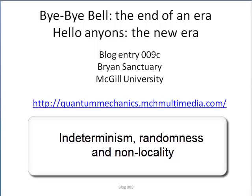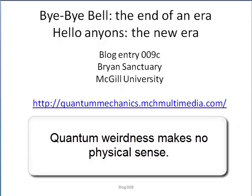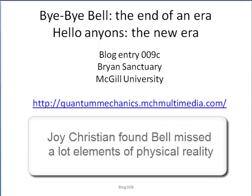First and foremost, the consequences from quantum mechanics in determinism and on locality are driving forces, because quantum weirdness makes no physical sense. The repudiation of Bell's theorem is a result of three independent studies. First, Girds has shown from a fundamental mathematical approach that quantum correlations do not exist — Bell's inequalities can be violated using classical probabilities.